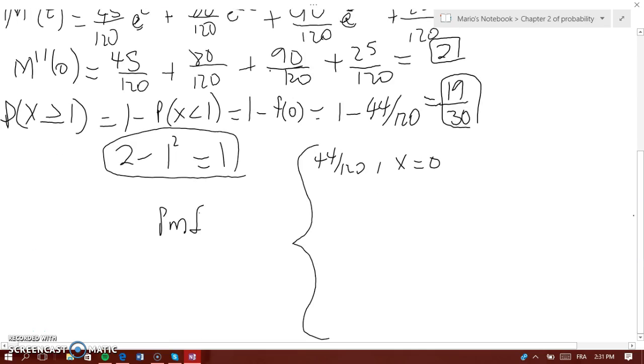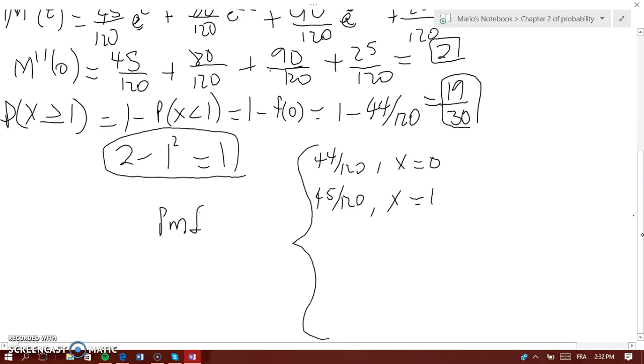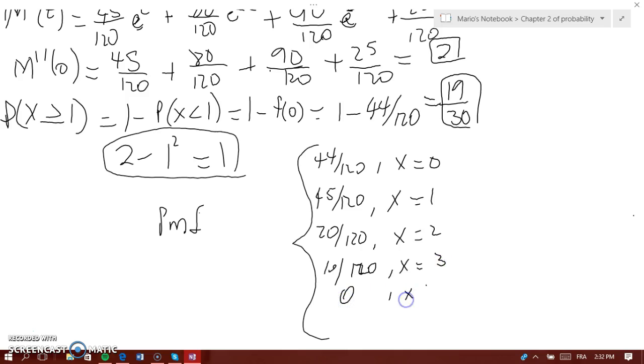Now, X equals 1, we have 45 over 120. That's when X equals 1, because it's 45 over 120 e to the power of 1t. When X equals 2, you have 20 over 120. Then you have 10 over 120 when X equals 3. Then you have 0 when X equals 4, and then you have 1 over 120 when X equals 5.